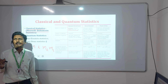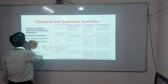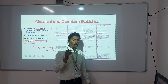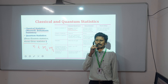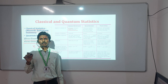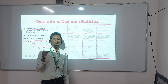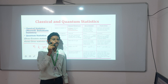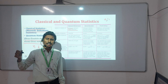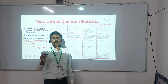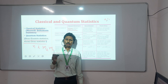Now, why are we considering quantum statistics? In quantum statistics there are two types: Bose-Einstein statistics and Fermi-Dirac statistics. In Bose-Einstein statistics, particles are identical and indistinguishable. An important consideration is that the particle has integral spin — 0, 1, 2, 3, 4 and so on. The particles do not obey the Pauli exclusion principle.